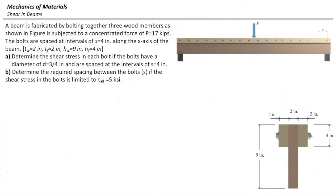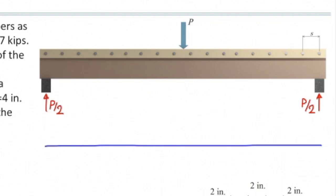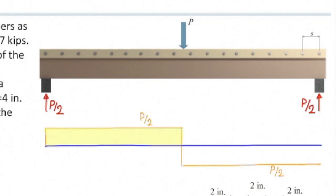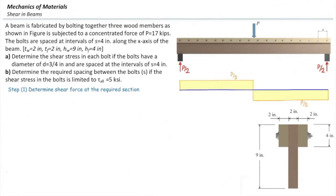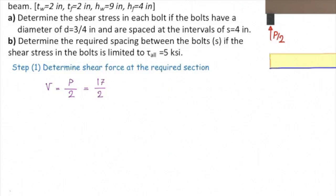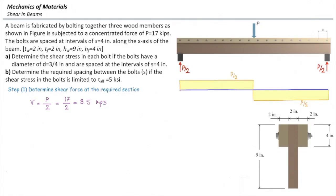The first step is determining the value of shear force in that beam. To do that, we find the reactions. The beam is symmetric, so each support gets half the force. Doing the shear diagram: starting from the left, it goes up by the reaction value, remains constant to the middle since there is no distributed load, then drops by P at the middle, and remains constant until reaching the right support where shear force is zero. The maximum shear force is P over 2, which is 17 over 2 = 8.5 kips.